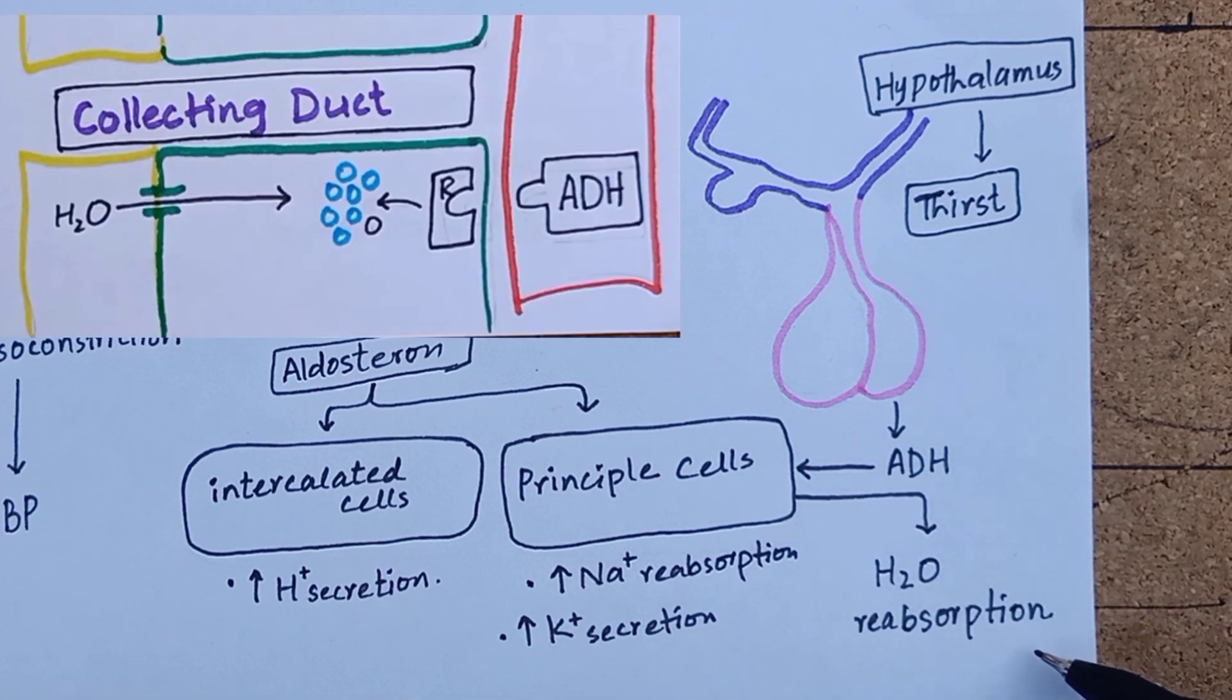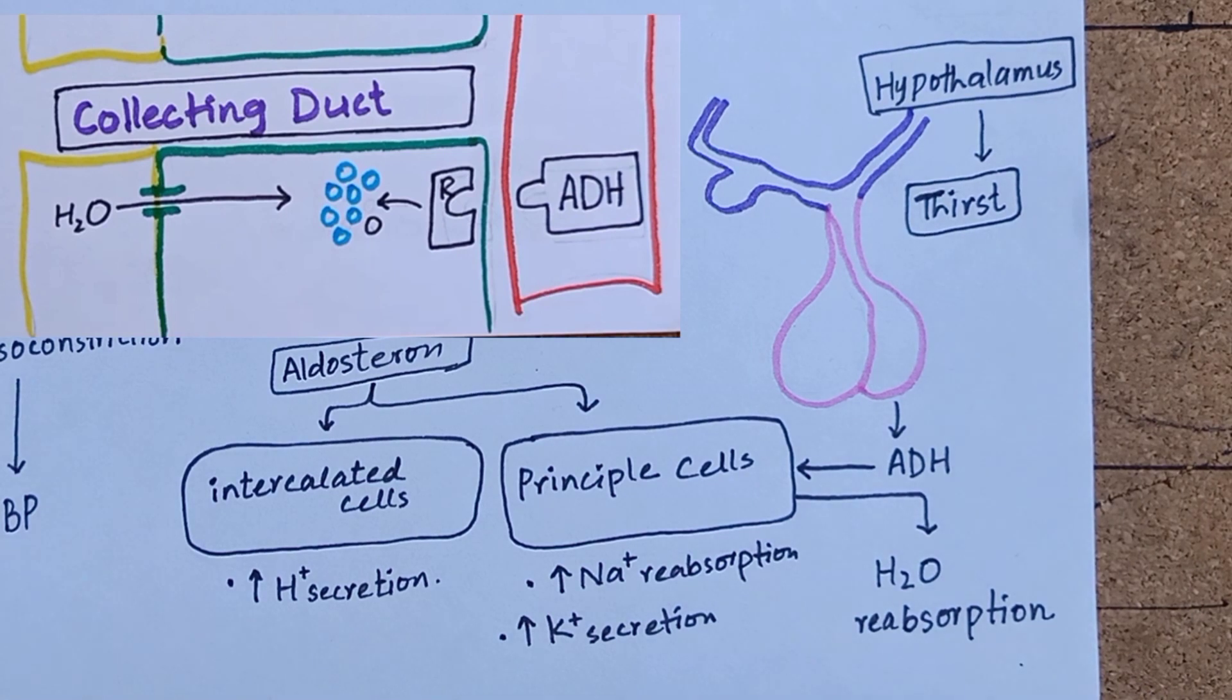Antidiuretic hormone binds to specific V2 receptors on collecting tubule and collecting duct, where it increases the formation of aquaporin 2 that permit rapid diffusion of water through the cells.